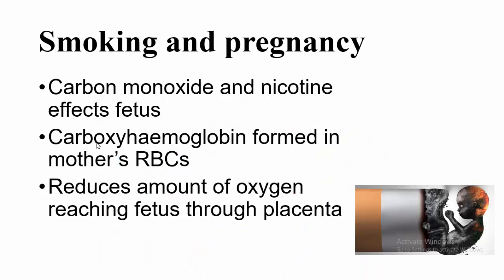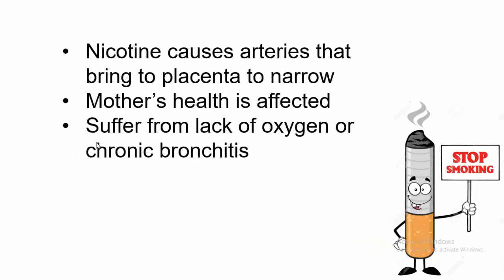Our next topic is smoking and pregnancy. Carbon monoxide and nicotine affect the fetus. Carboxyhemoglobin is formed in the mother's red blood cells. Carboxyhemoglobin reduces the oxygen-carrying capacity of hemoglobin. If the oxygen-carrying capacity of hemoglobin is reduced, it reduces the amount of oxygen that reaches the fetus through the placenta. Nicotine causes the arteries that bring blood to the placenta to narrow. If the arteries become narrow, the fetus will not be able to get nutrients through blood. The fetus and mother suffer from lack of oxygen.